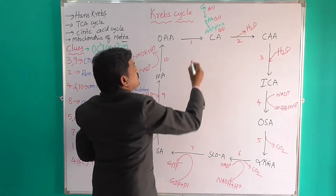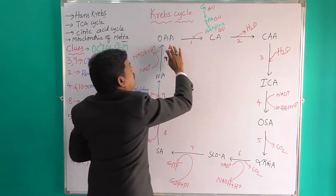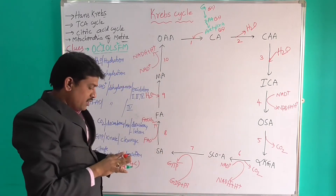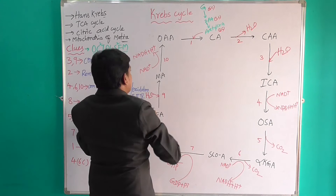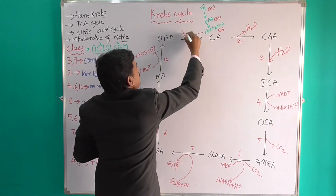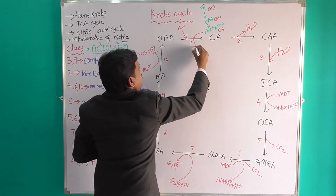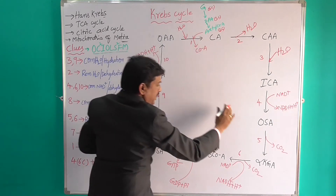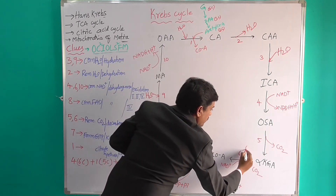Glucose has six carbons. Pyruvic acid has three carbons. Acetyl-CoA has two carbons. This Acetyl-CoA enters into the oxaloacetic acid cycle, combining with water and removing Coenzyme A.